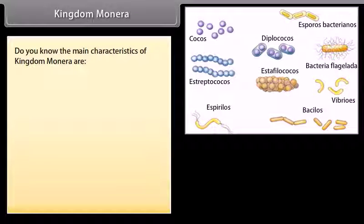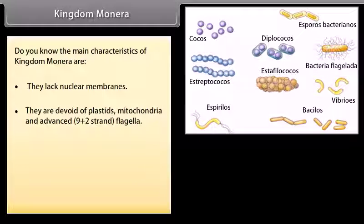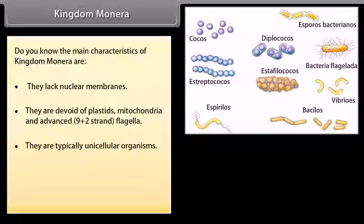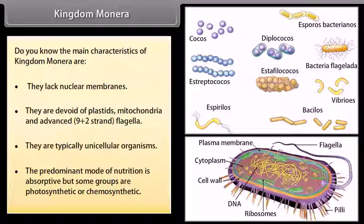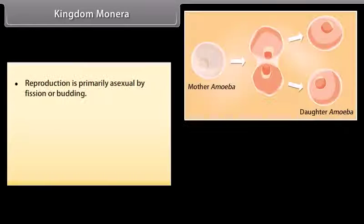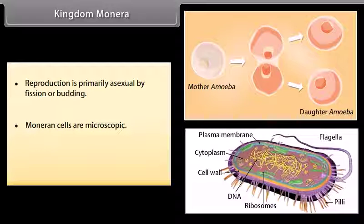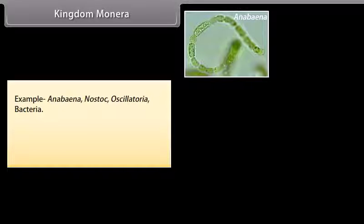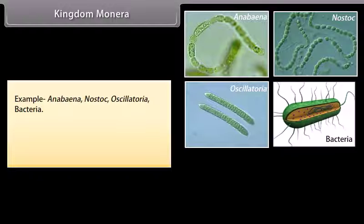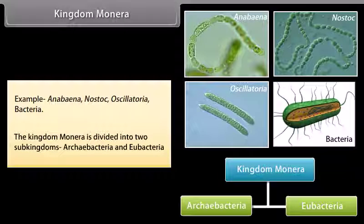The main characteristics of Kingdom Monera are: they lack nuclear membranes; they are devoid of plastids, mitochondria, and advanced 9+2 strand flagella. They are typically unicellular organisms. The predominant mode of nutrition is absorptive, but some groups are photosynthetic or chemosynthetic. Reproduction is primarily asexual by fission or budding. Moneran cells are microscopic and most organisms bear a rigid cell wall. Examples include Anabaena, Nostoc, Oscillatoria, and Bacteria. The kingdom Monera is divided into two sub-kingdoms: Archaebacteria and Eubacteria.